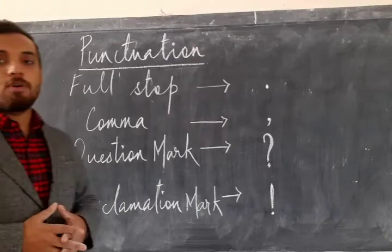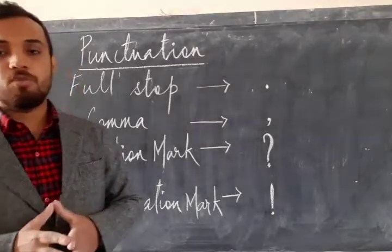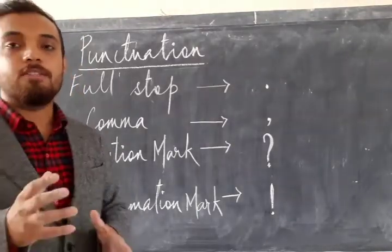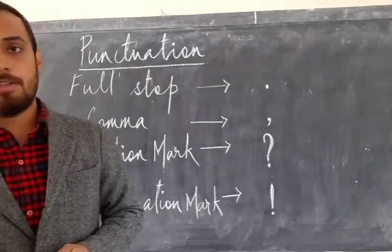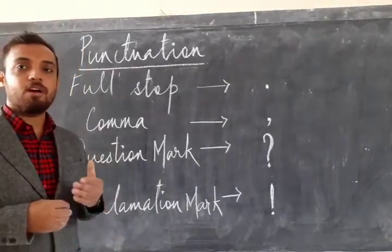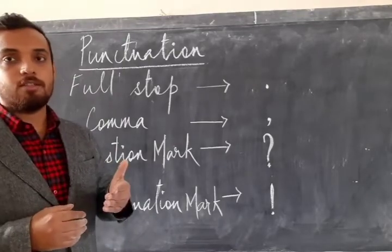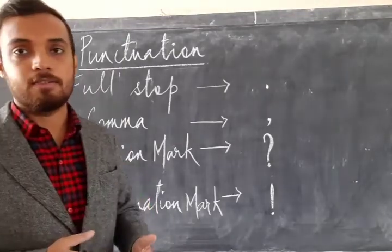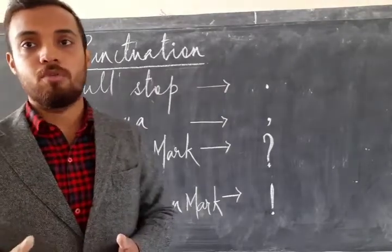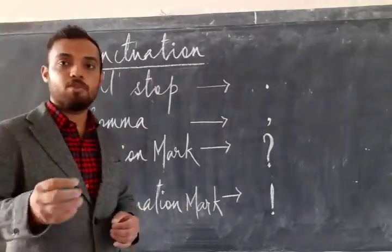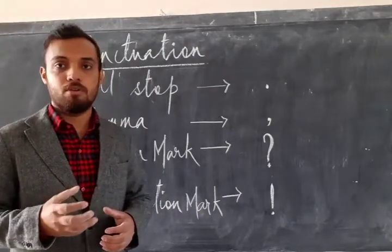The third one is question mark. Why do we need question mark? Because it denotes a question. It is used to ask questions. Whenever we are asking a question, it is used at the end of a sentence to mark the end of a question. How are you? We put a question mark because we are asking some question.